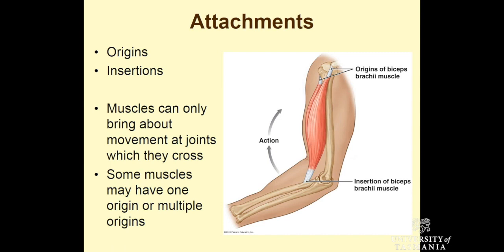Muscles have what we call origins and insertions. The biceps brachii originates with two heads — because biceps means two heads. One head originates from the acromion process and another from the humerus. Those two heads eventually insert by our tendon into the radius, at the radial tuberosity. So this muscle has two origins and then one insertion point.